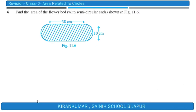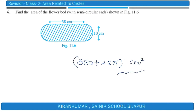Question 6 is left for you to try. You should get 380 + 25π cm² as the area of the flower bed. We will solve this question again in the next session. That's all for today's session, thank you.